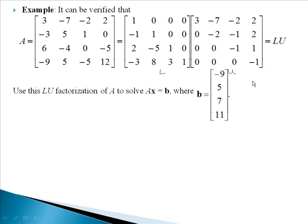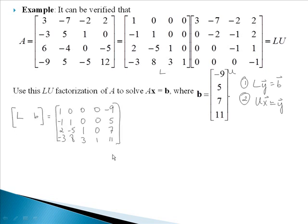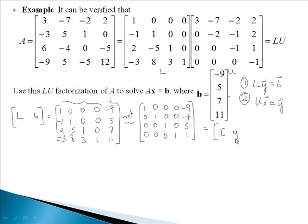We want to use this factorization of A to solve our equation AX equals B, where B is this given column vector here. First, we're going to solve LY equals B and solve that for Y. Then the second step, solve UX equals Y using the Y vector I found from above. I'm going to set up an augmented matrix with L and B. Notice that this first part here is my matrix L from above, and then this here is my vector B. We want to row reduce this to produce the identity matrix, and then our solution vector will be the last column. We've solved this and gotten the identity and then our vector Y.